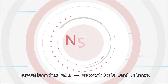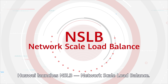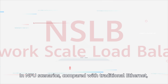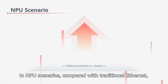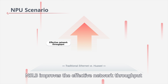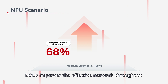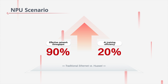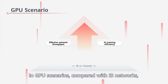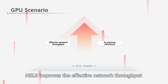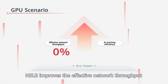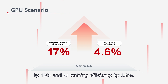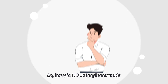To address this issue, Huawei launches NSLB, Network Scale Load Balance. In NPU scenarios compared with traditional Ethernet, NSLB improves the effective network throughput by 90% and AI training efficiency by 20%. In GPU scenarios compared with IB networks, NSLB improves the effective network throughput by 17% and AI training efficiency by 4.6%.